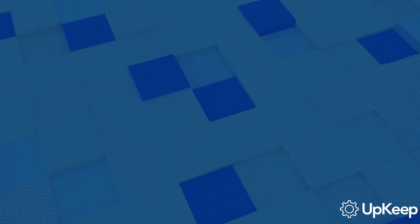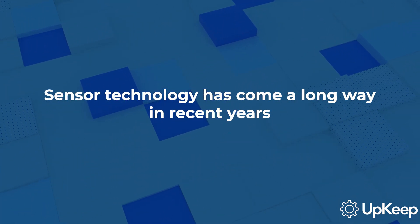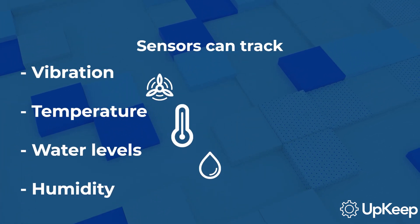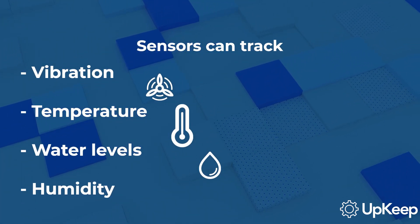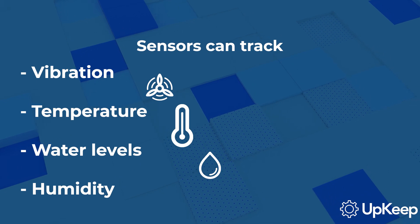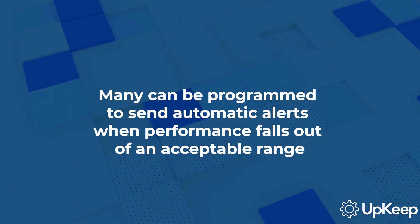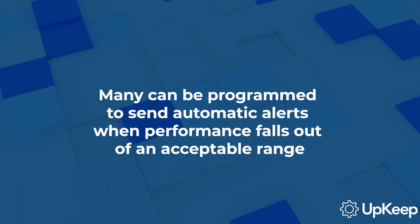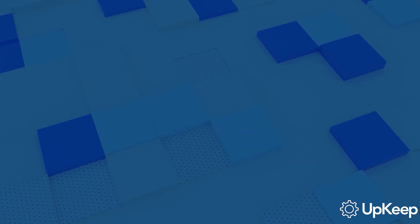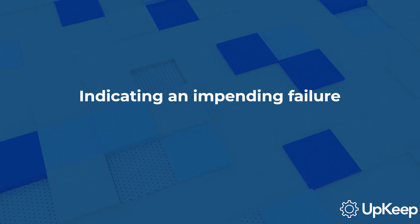Then, predictive maintenance. Sensor technology has come a long way in recent years. Now sensors can track vibration, temperature, water levels, humidity, and more on a near-constant basis. Many can be programmed to send automatic alerts when performance falls out of an acceptable range, indicating an impending failure.